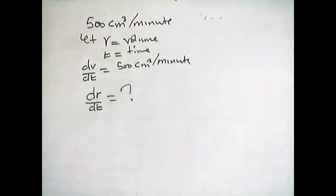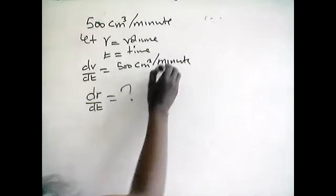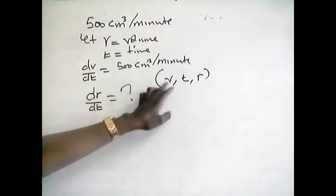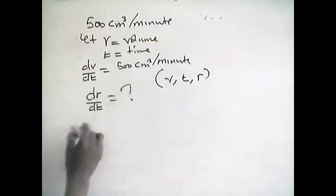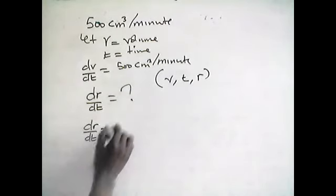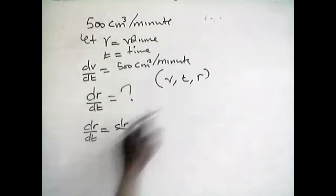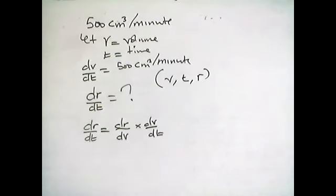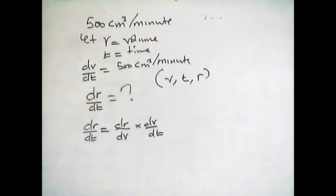We have to identify the variables in this question. We have volume V, time T, and radius R — three variables. We need a formula. Looking at dR/dT using chain rule, since we have R and T, the remaining variable is V. So dR/dT equals dR/dV multiplied by dV/dT.